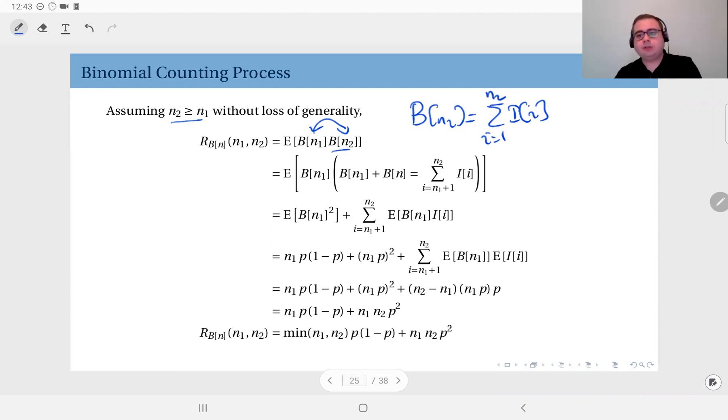So all the values i1, i2, etc., up to i n1, well, when you add them up you get b of n1, but at the same time they are also in b of n2. Okay, so b of n1 and b of n2 are not independent.